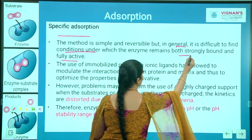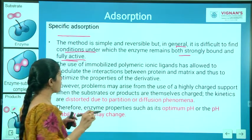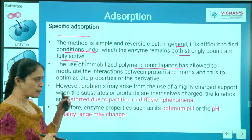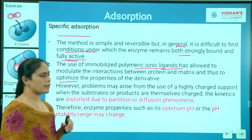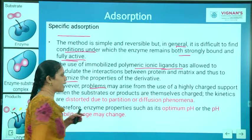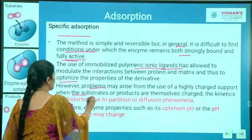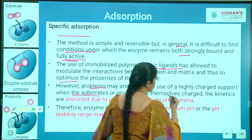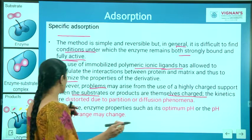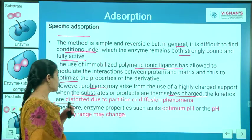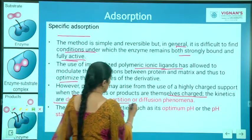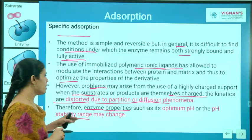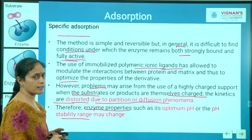It is very problematic to find both binding strength and activity in the same conditions. The use of immobilized polymeric ionic ligands has allowed modulation of the interaction between protein and matrix to optimize the properties of the derivative. Problems may arise from highly charged supports causing kinetic distortions due to partition or diffusion phenomena, drastically changing the enzyme's optimum pH range or pH stability range.